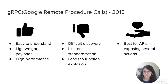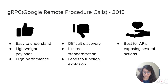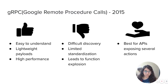Coming to gRPC, or remote procedure calls, which came into existence around 2015: it's easy to understand, has lightweight payloads, and the performance is really high. Coming to disadvantages, discovery is difficult and there is limited standardization because it's very recent. It may also lead to function explosion. It's considered best for APIs exposing several actions.